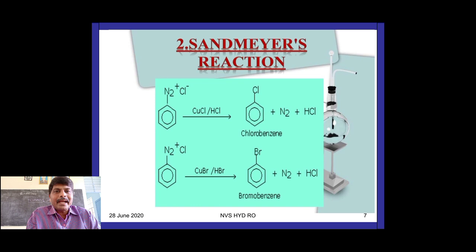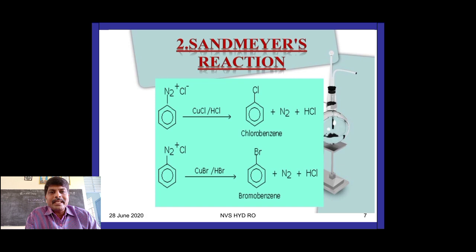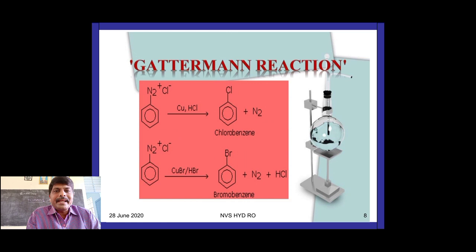The second method is the Sandmeyer reaction — a named reaction frequently asked in board exams. When benzene diazonium chloride reacts with cuprous chloride (CuCl) in the presence of HCl, the product is chlorobenzene. When benzene diazonium chloride reacts with cuprous bromide (CuBr), the product is bromobenzene.